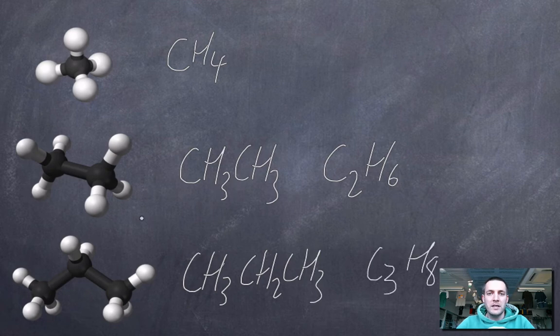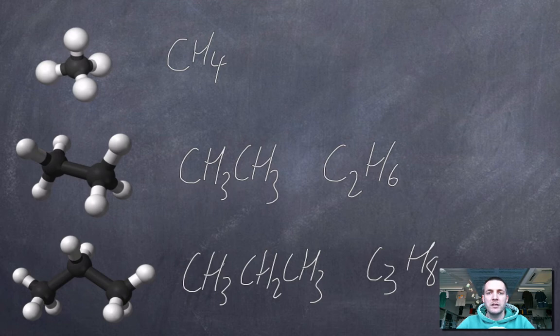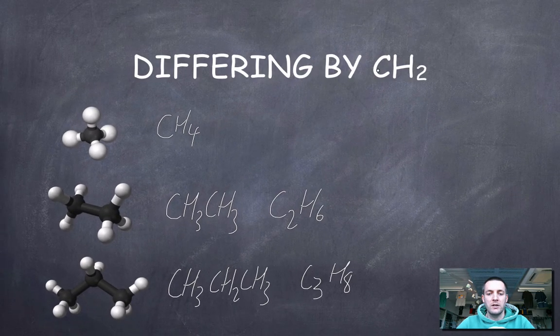Lots of different ways of representing compounds, but what you can see is that as the chain gets longer by one carbon each time, the number of carbons increases by one, but the number of hydrogens increases by two. So the members of a homologous series will differ by CH2 from the next one in turn.